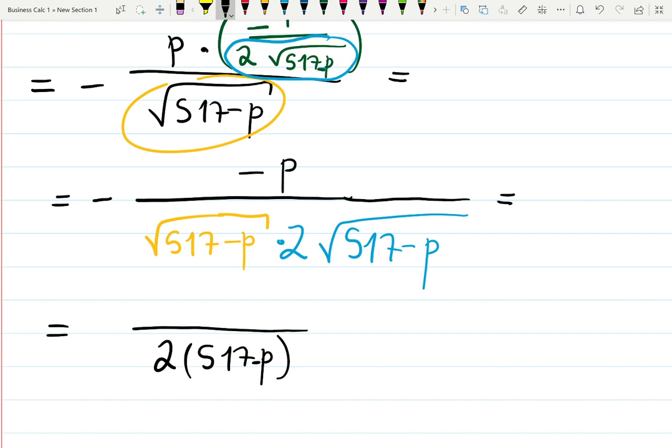And on top I will have minus minus p, that's just plus p. This is my E, the elasticity of the demand function of the price p. Found it.